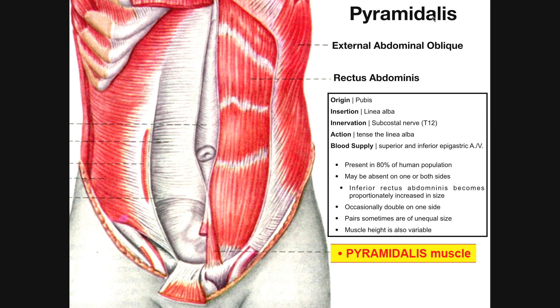And there's a fifth one. It's a lot smaller, and the major reason we talk about it is not its size — it's because it's a highly variable muscle, probably due to genetic factors and genetic differences. First, let's identify the muscle, and then we'll talk about how it's variable.